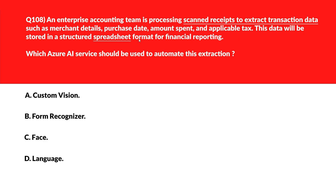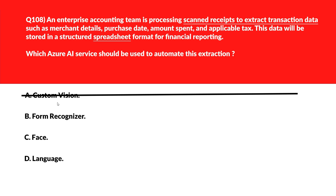We have scanned receipts and need to extract transaction data such as merchant details and purchase date. Option A says Custom Vision — Custom Vision identifies visual patterns but doesn't extract structured transactional fields from receipts, so incorrect. Option B says Form Recognizer — Form Recognizer is designed to analyze documents and extract key fields like date, merchant, and other information from receipts, which is exactly what we need, so let's keep this.